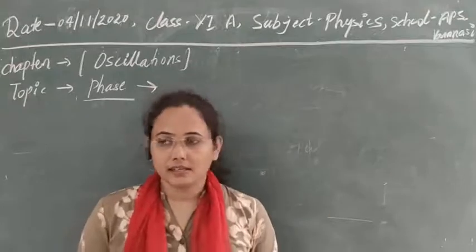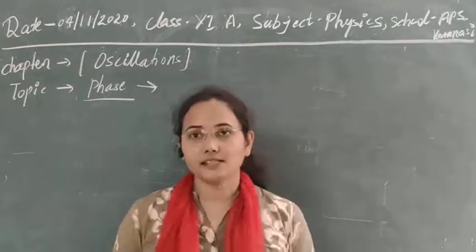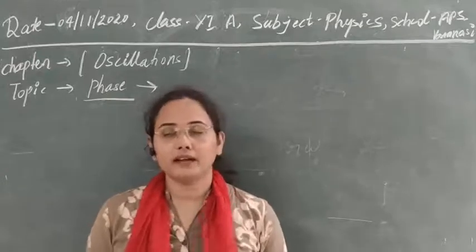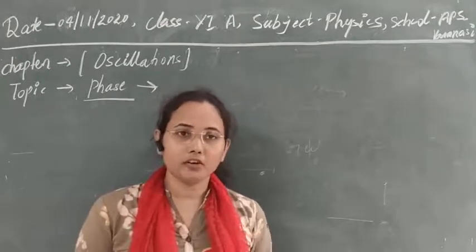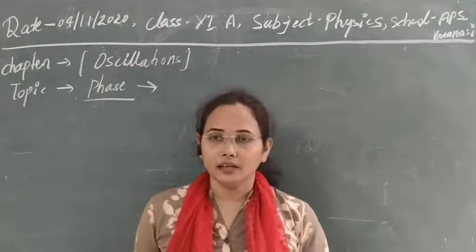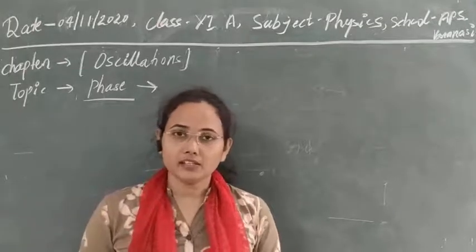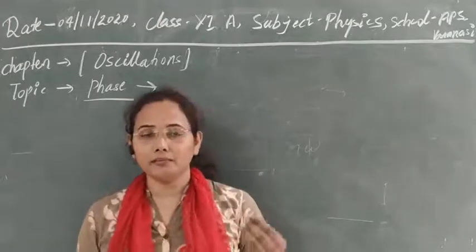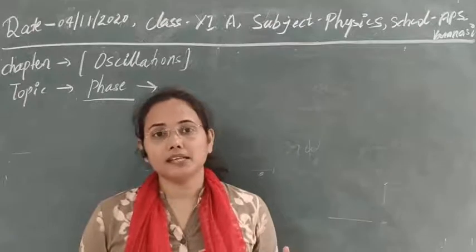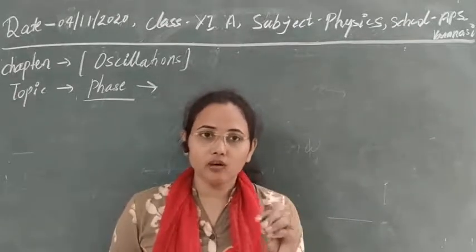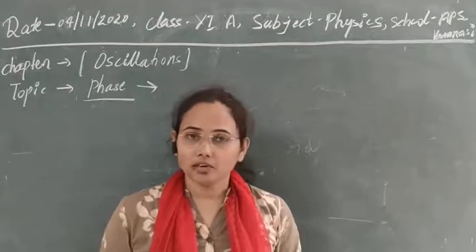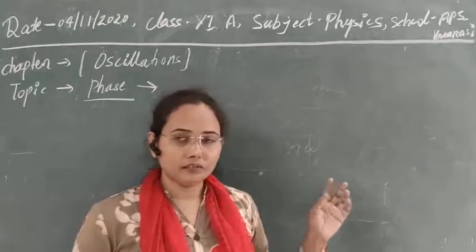Hello students. In previous classes we studied about oscillations: what is periodic motion, what is periodic function, and what is oscillatory motion. We saw that every oscillatory motion can be periodic but every periodic motion may not be oscillatory. Periodic motion is that in which motion repeats itself after a fixed interval of time, and all values of the motion will be equal to the initial values.